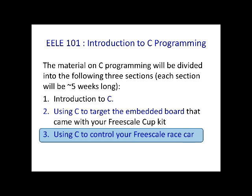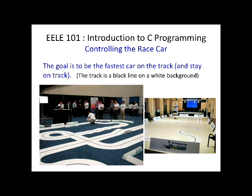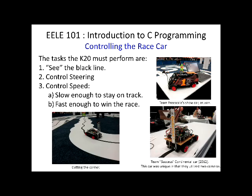Then you'll use C to control your race car. The goal is to race it on a track and be the fastest. There's a black line on a white background, and you have a linear array camera that's going to find where the black line is. Your onboard microcontroller has to determine where the black line is in that array, control the steering angle to keep it on the line, and control the speed of the car so it doesn't go too fast and fly off the track. You need to see the black line, control steering, and control speed — slow enough to stay on the track, but fast enough to win the race.